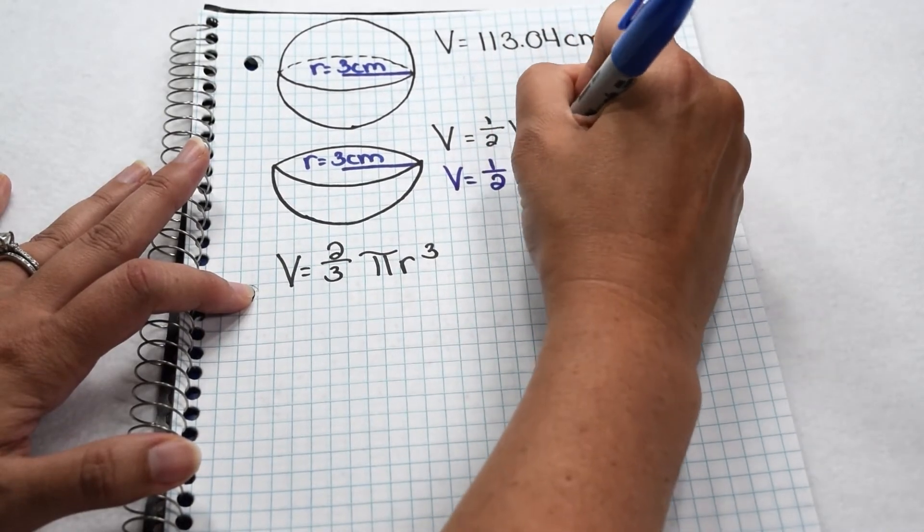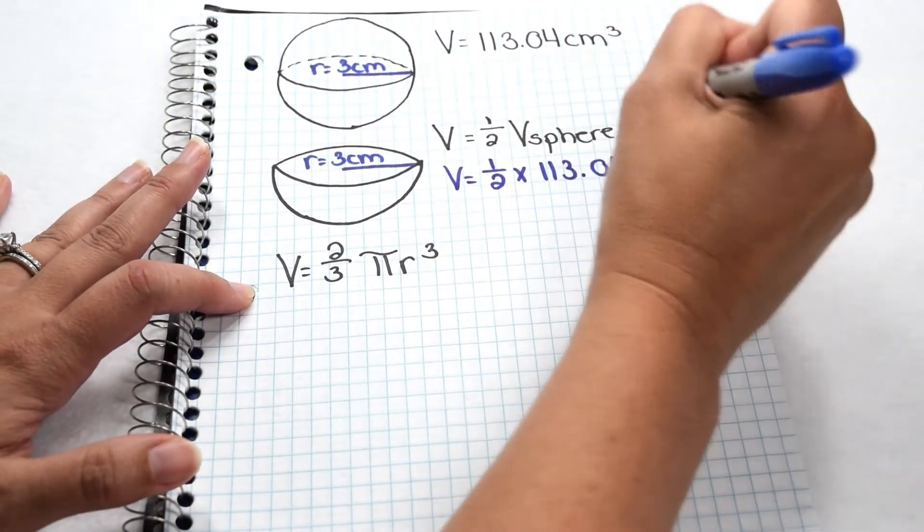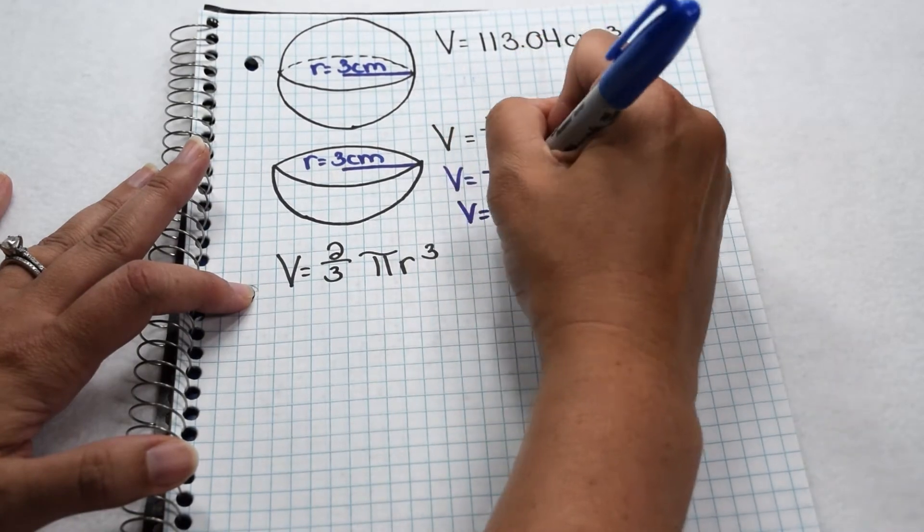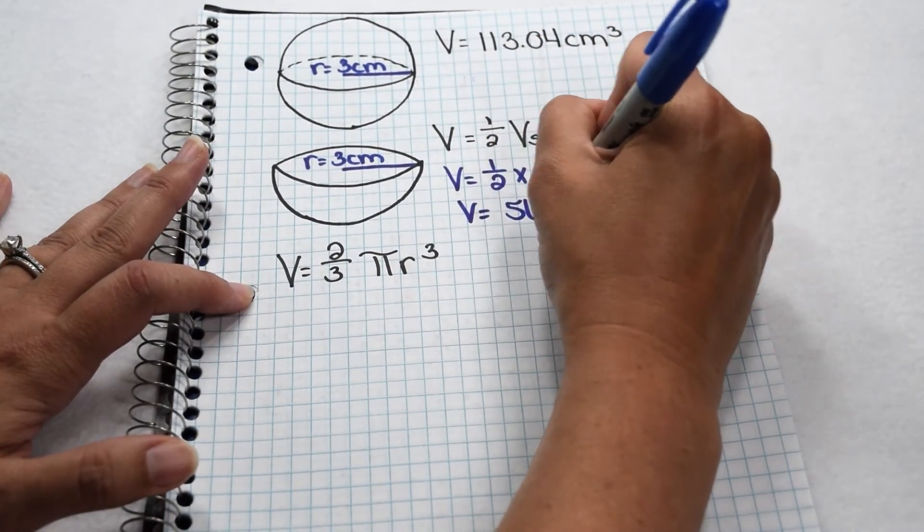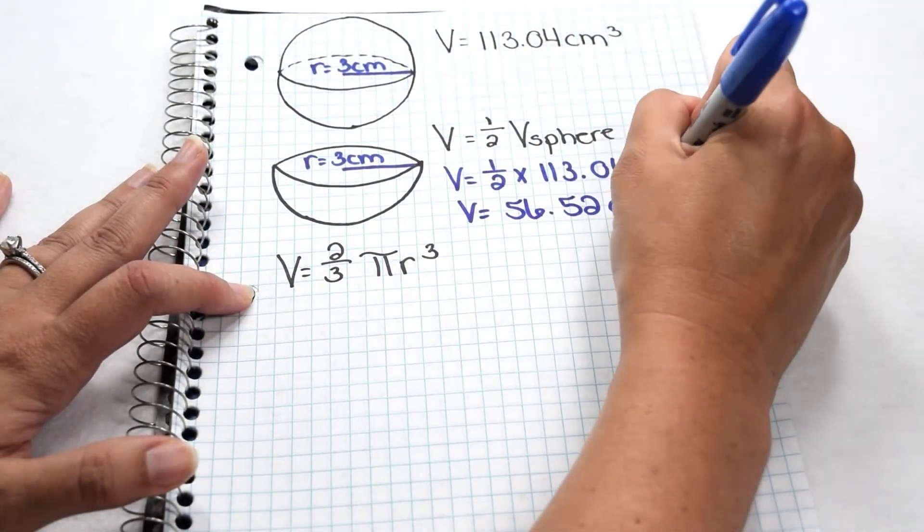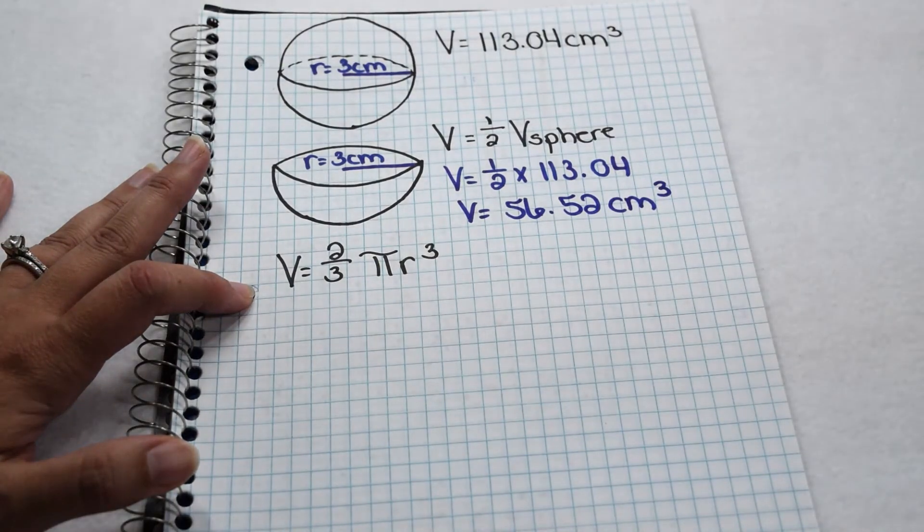If we use the relationship that a hemisphere is worth half the volume of a sphere, we can find its volume by doing one-half times 113.04. That means the volume of our hemisphere should come out to be 56.52 cubic centimeters.